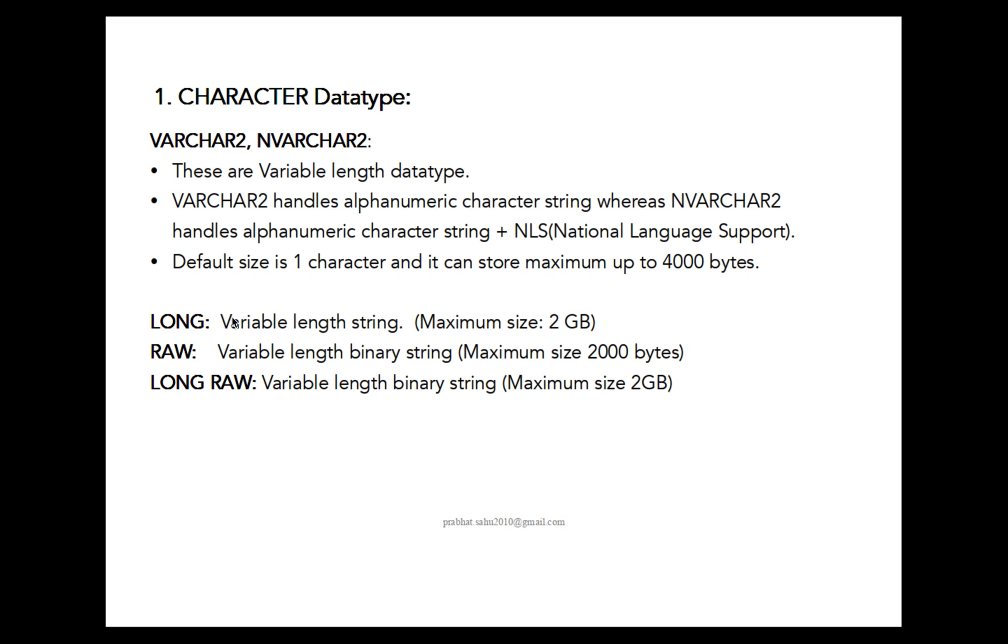Under character data type, a few more data types are there like LONG, RAW, and LONG RAW. LONG is a variable length string with maximum size up to 2 GB. RAW type variable can save up to maximum 2000 bytes and it's a variable length binary string. LONG RAW is a variable length binary string and you can save up to maximum 2 GB data.